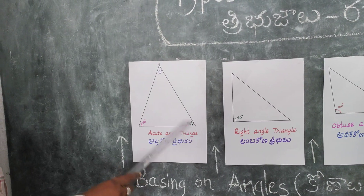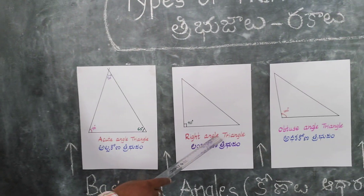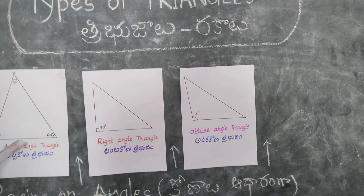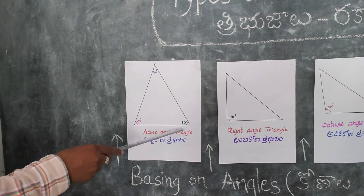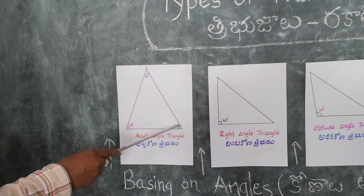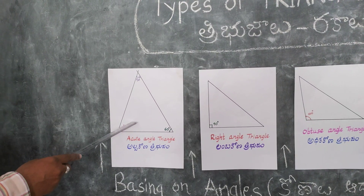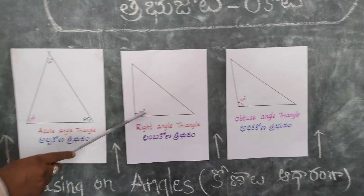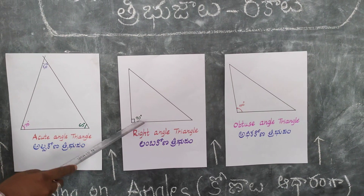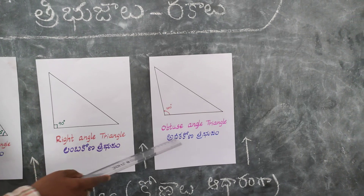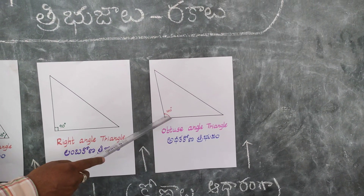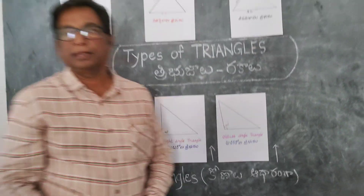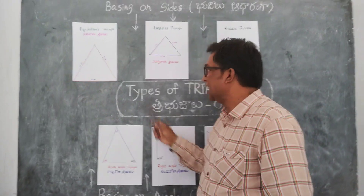Acute angle triangle, right angle triangle, obtuse angle triangle. In acute angle triangle, all three angles are less than 90 degrees. In right angle triangle, one angle is 90 degrees. In obtuse angle triangle, one angle is greater than 90 degrees.